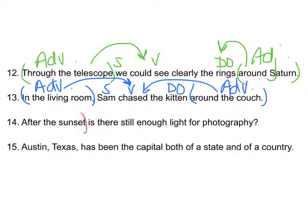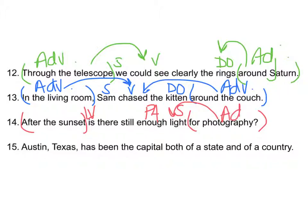'After the sunset, there is still enough light for photography.' The sentence is a little tricky, so let's think about it as 'there is still enough light.' The verb is 'is'; what is? Light is — linking verb. 'Enough' is a predicate adjective. 'For photography' — light for photography — 'photography' modifies 'light,' which is a noun: adjective phrase. 'After the sunset' — there is after the sunset — modifies the verb: adverbial phrase.